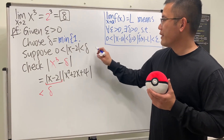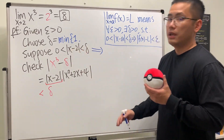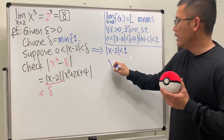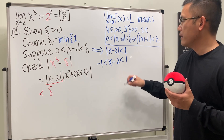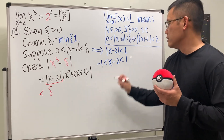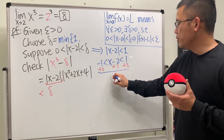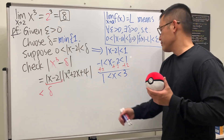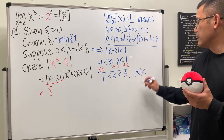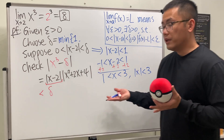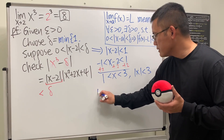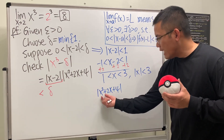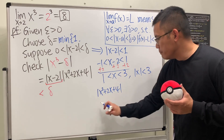We choose delta as the minimum of 1 and something else — don't use zero, use 1. We replace delta with 1 and work out the inequality: absolute value of x minus 2 is less than 1, which opens to negative 1 less than x minus 2 less than 1. Adding 2 to all sides, x is between 1 and 3, so absolute value of x is less than 3.